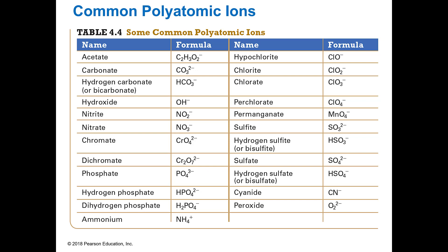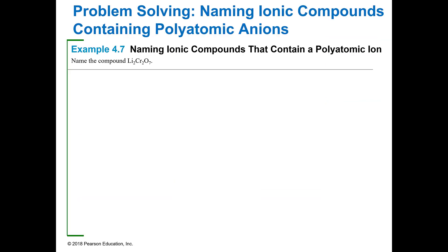There's only one polyatomic ion that is a positive ion, and that's ammonium. Since it acts as the metal, you're going to write it and name it at the beginning rather than at the end. Everything else is negative — everything else acts as the nonmetal. You can look these up, and the sheet even has the charges for you.